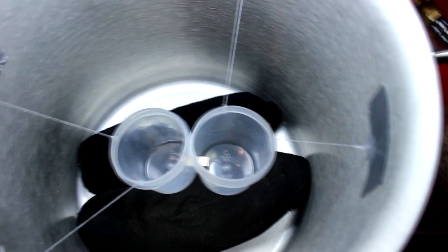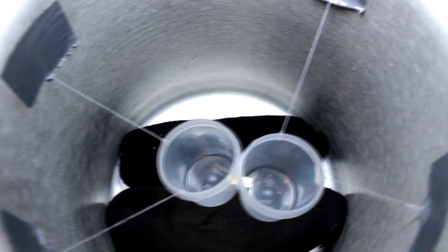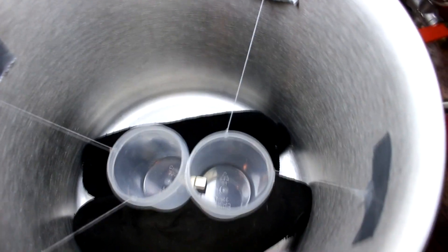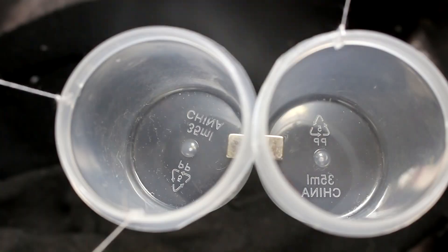One will have oxygen, the other will have nitrogen. You can see there's a couple little magnets in there holding it together. And if we have oxygen, then the oxygen should be magnetic.